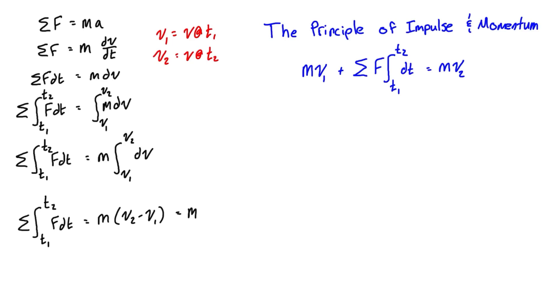We can just distribute the m through those brackets, so the right hand side is also equal to mv2 minus mv1. If we just bring the mv1 to the other side, we get the principle of impulse and momentum as it's written in blue.